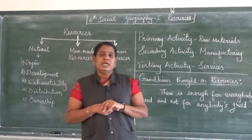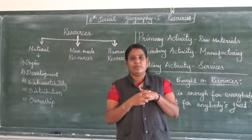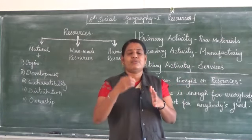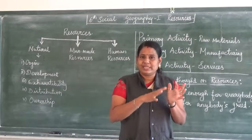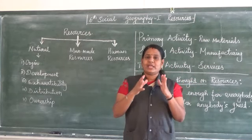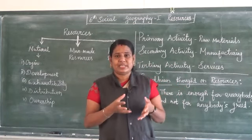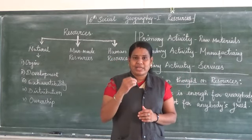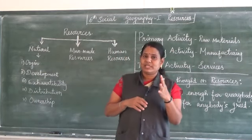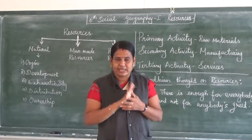In a previous class we discussed primary activities. What are primary activities? In the ancient world, people were leading a nomadic life, moving from one place to another to search for food. For their food, they used farming, fishing, forestry, and hunting. When they used natural activities — using the environment — that is called primary activities. Primary activities means they used raw materials through hunting, fishing, and forestry.